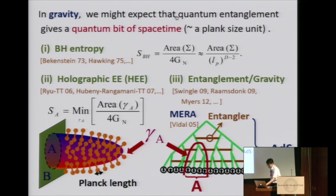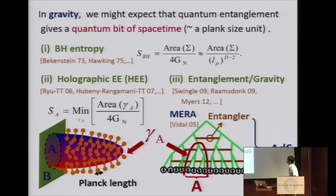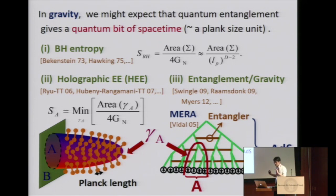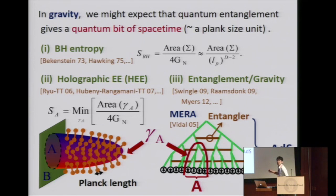On the other hand, that was a story in quantum field theory or quantum many-body systems. But if we talk about gravity, this idea of quantum entanglement plays a very crucial role. This suggests that quantum entanglement actually gives us some structure of space-time — space-time can be regarded as some collection of lots of quantum bits. This is first and most clearly suggested in the context of the famous Bekenstein-Hawking black hole entropy, the area formula, which says that one bit corresponds to one Planck unit.